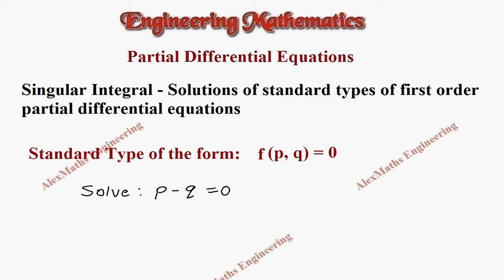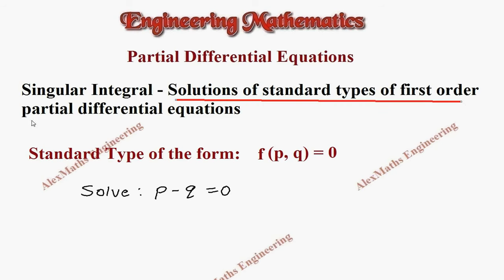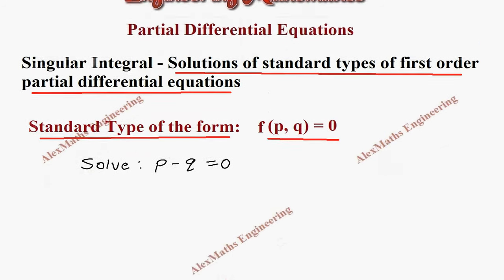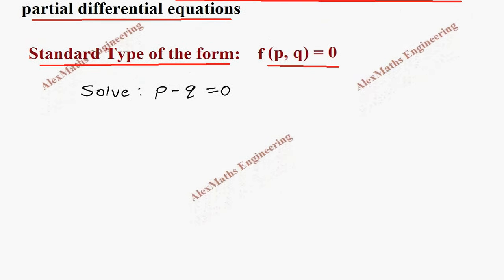Hi students, this is Alex. In this video we are going to find the solutions of standard types of first order partial differential equations. Here we are going to take the standard type of the form f(p, q) = 0. Coming to the question, we have to solve p minus q equal to 0.